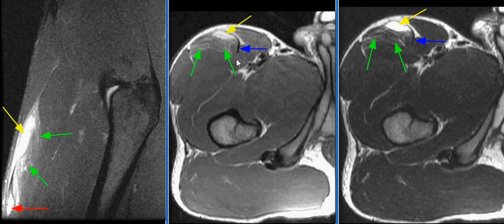The normal deep tendon of the indirect head is seen on this image, indicated by the blue arrow. MR findings are consistent with a direct head rectus femoris tendon injury.